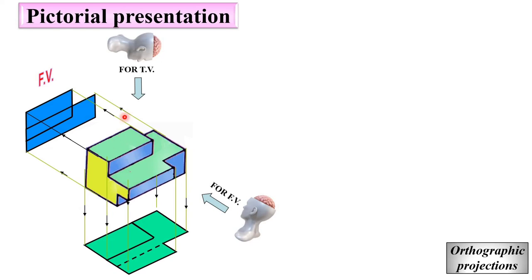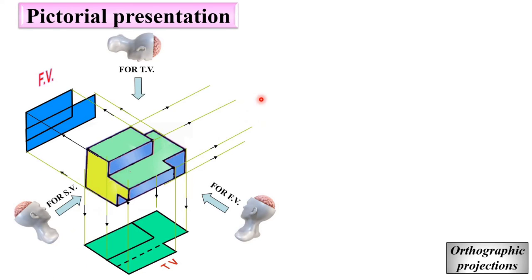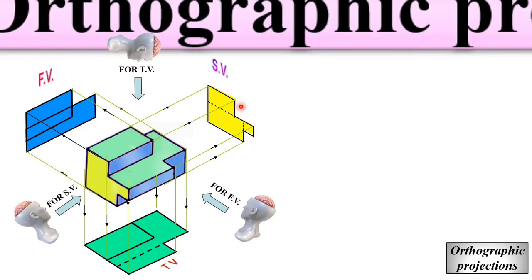If you cannot see any edge in any view, then it is represented by a dotted line. For the side view, it is like this. One edge from here to here that you cannot see — so this will be a dotted line. One more edge here that you cannot see from this side — so that will also be a dotted line. So, this is the side view.